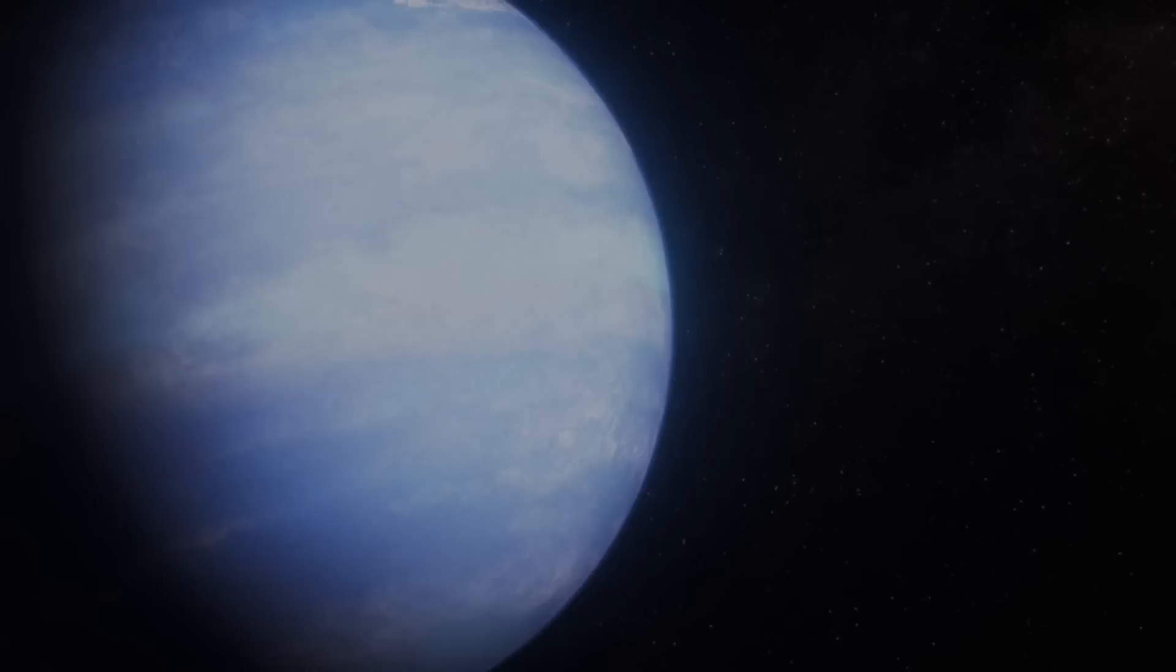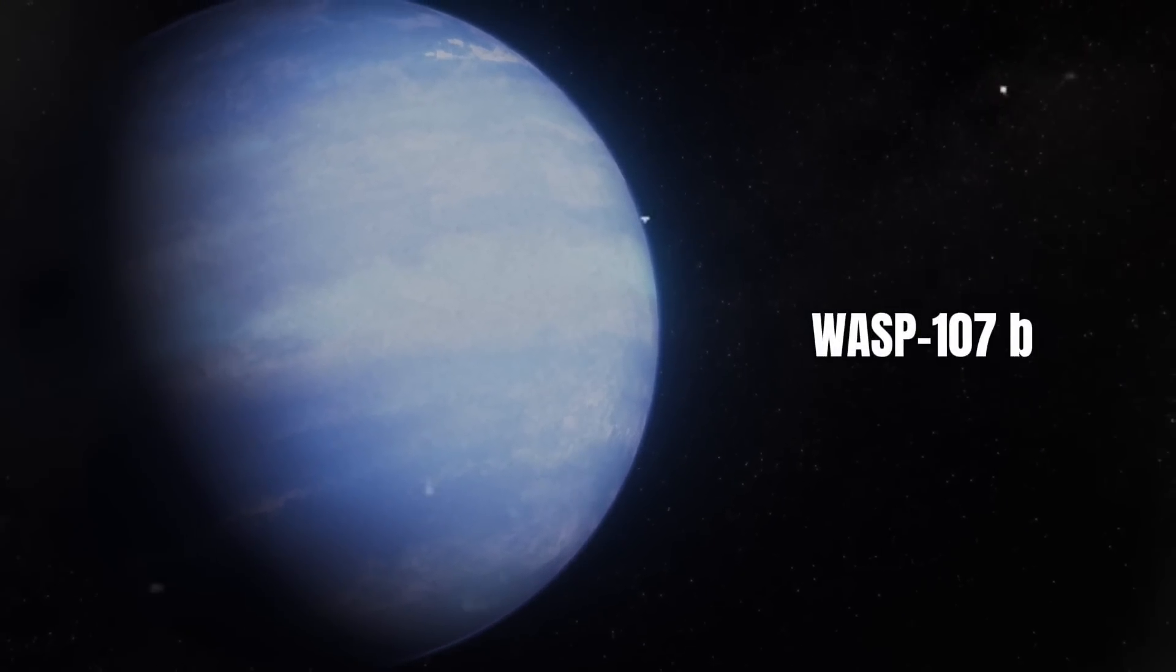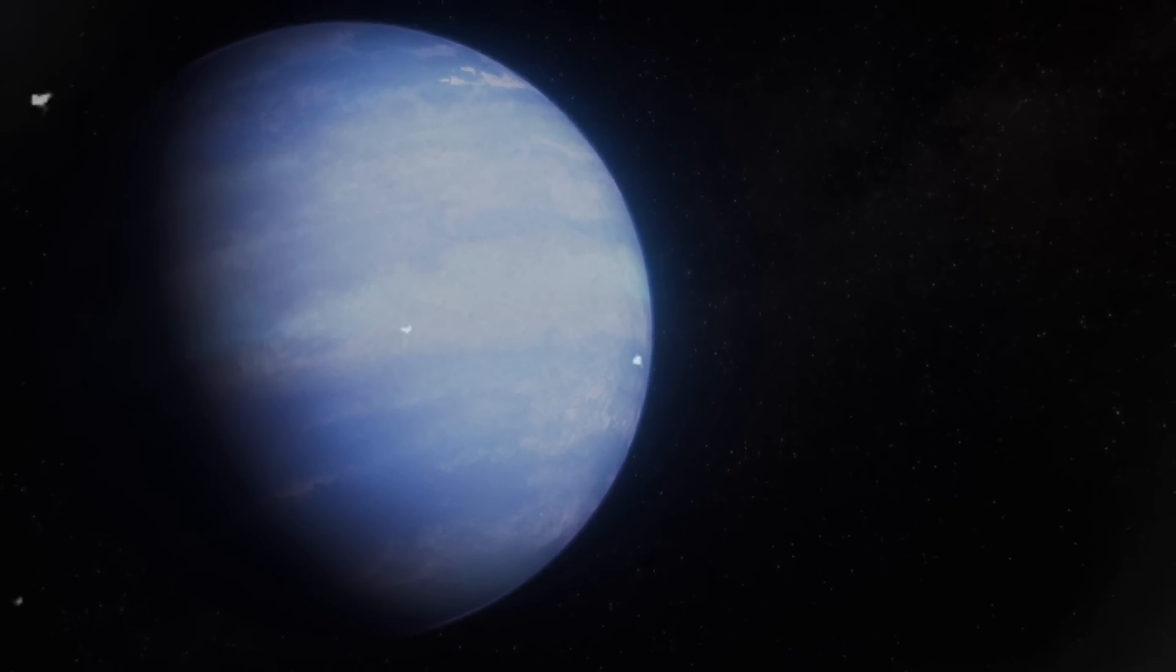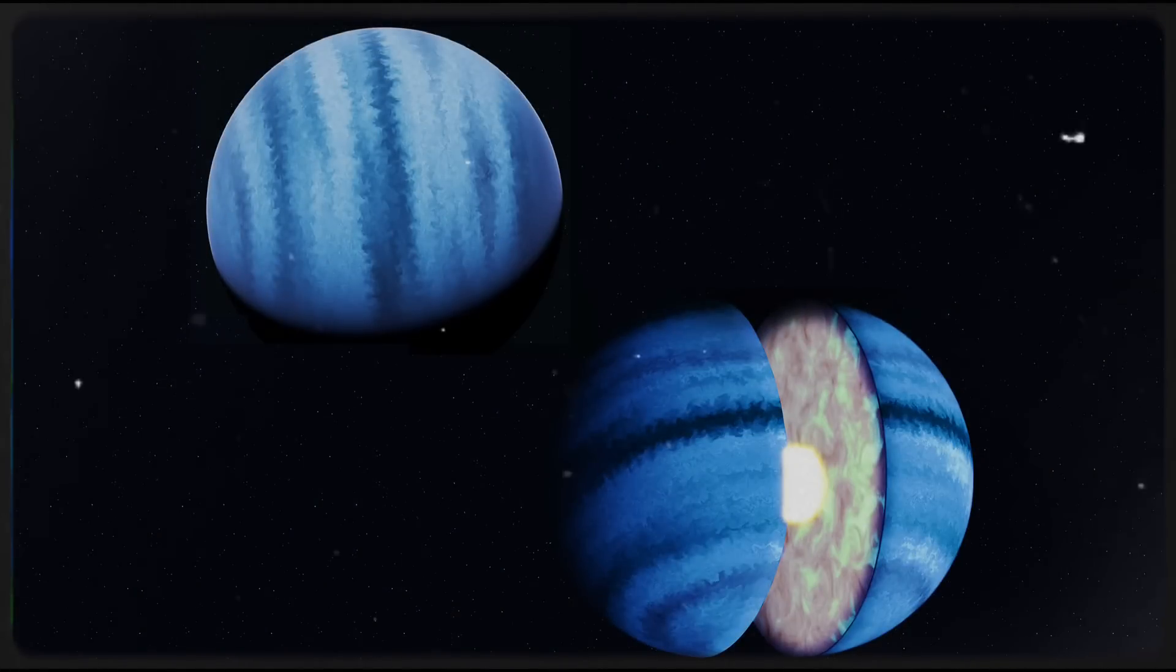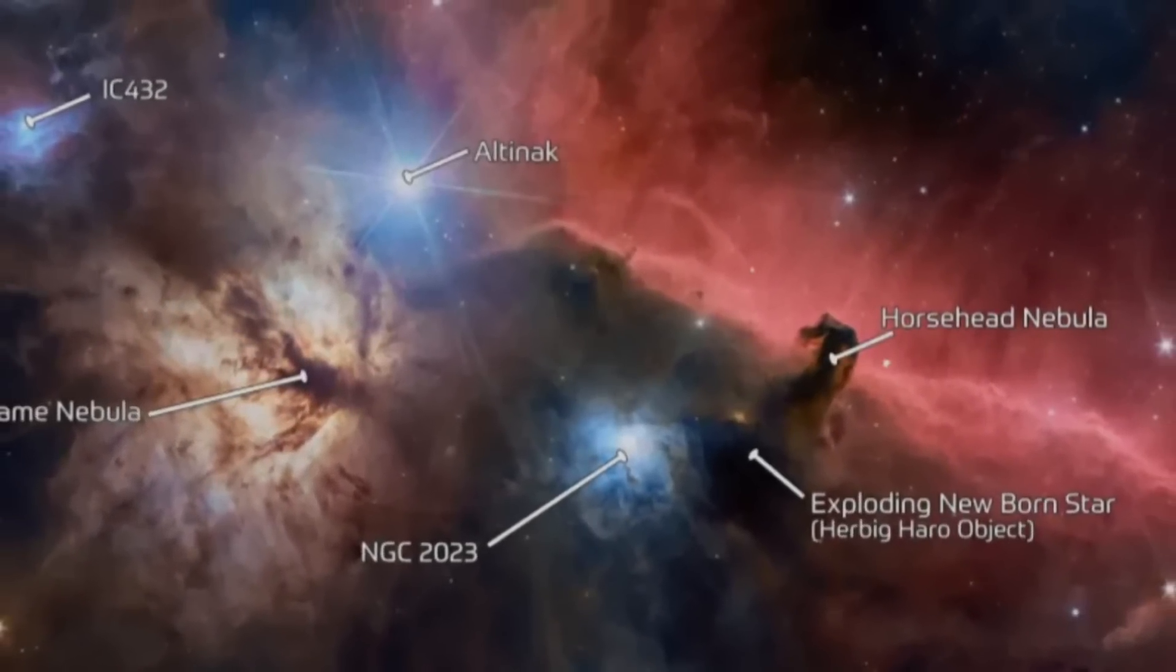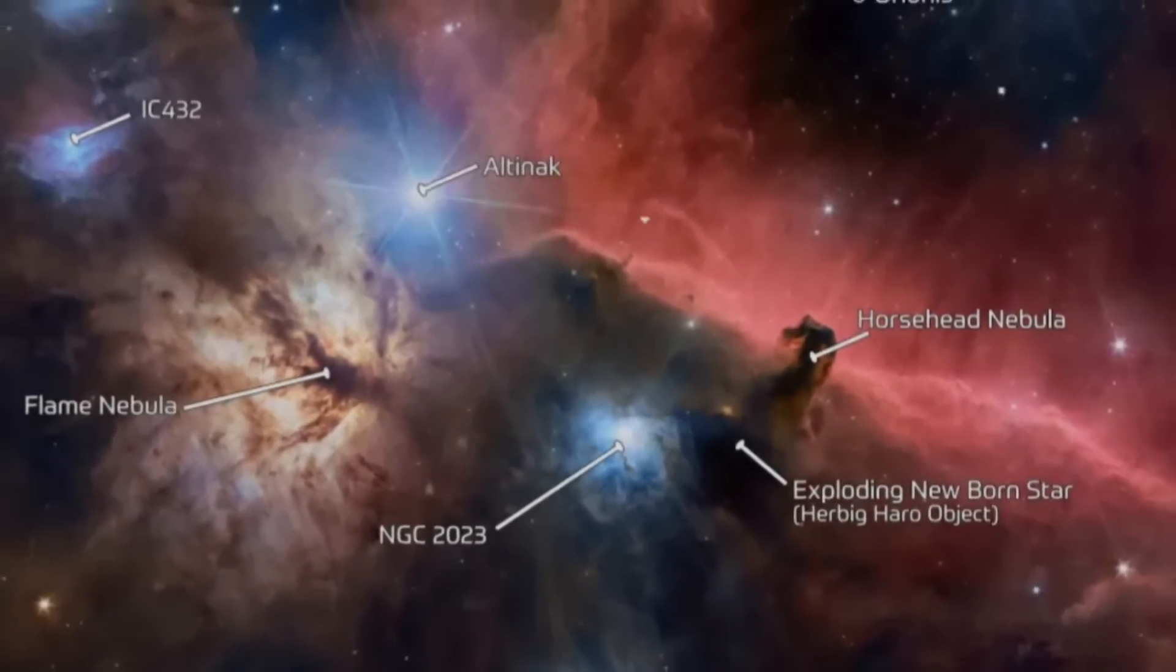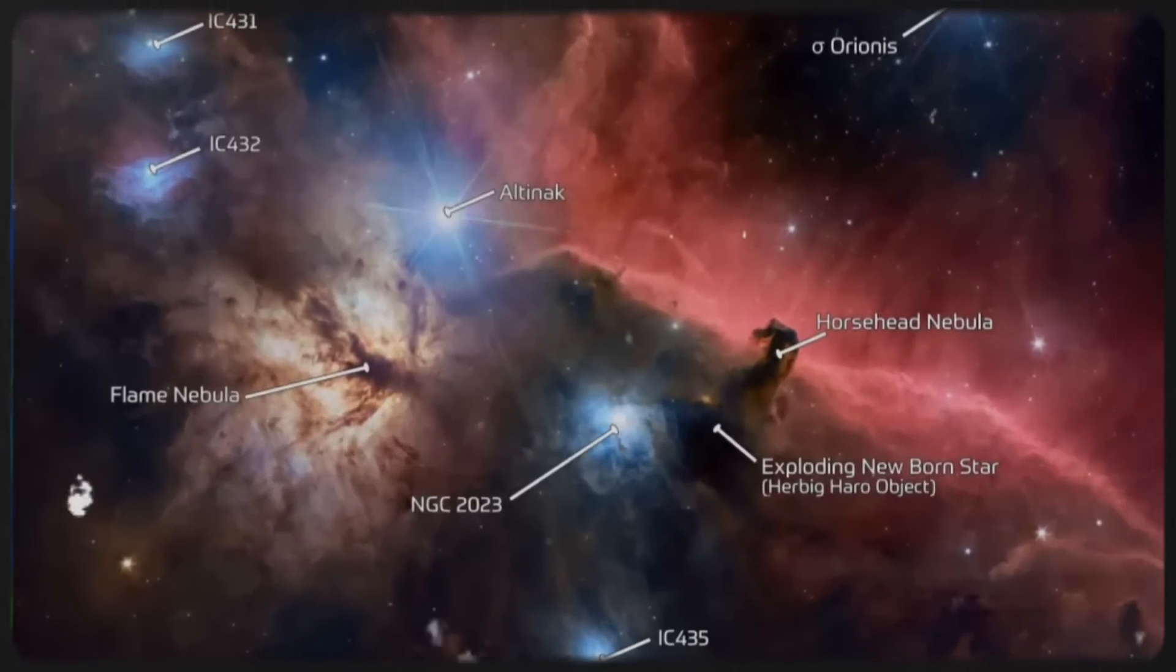Webb's advanced instruments have identified WASP-107b, a bloated gas giant exoplanet with significantly less methane in its atmosphere than expected, suggesting that its core may be much hotter than previously thought. Additionally, another gas giant located about 280 light-years away has been found to experience extreme winds reaching staggering speeds of up to 8,000 kilometers per hour.